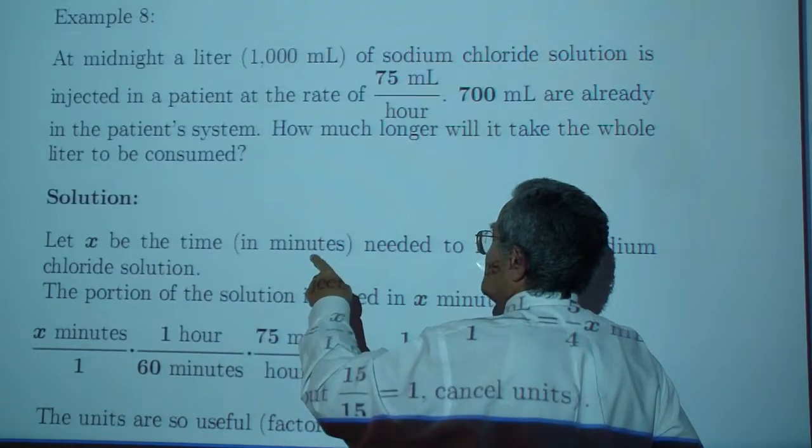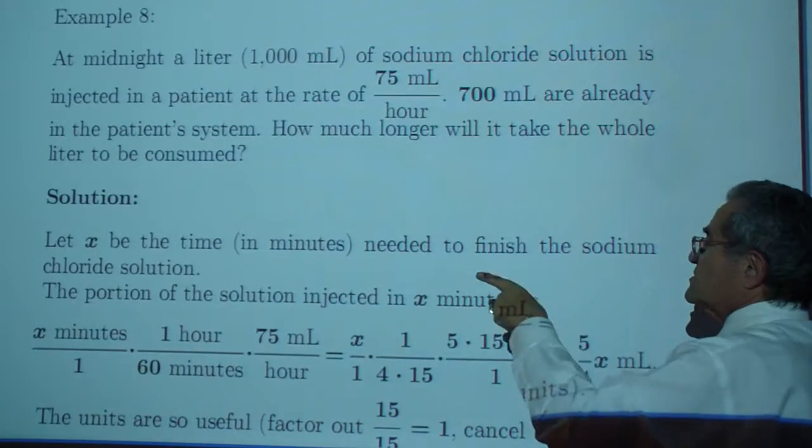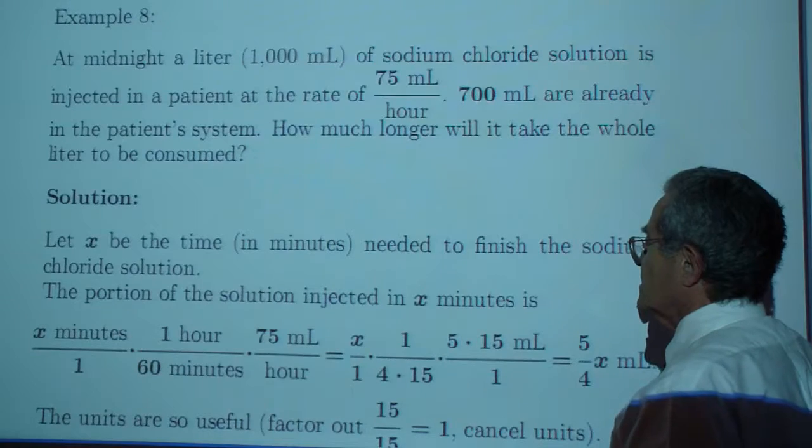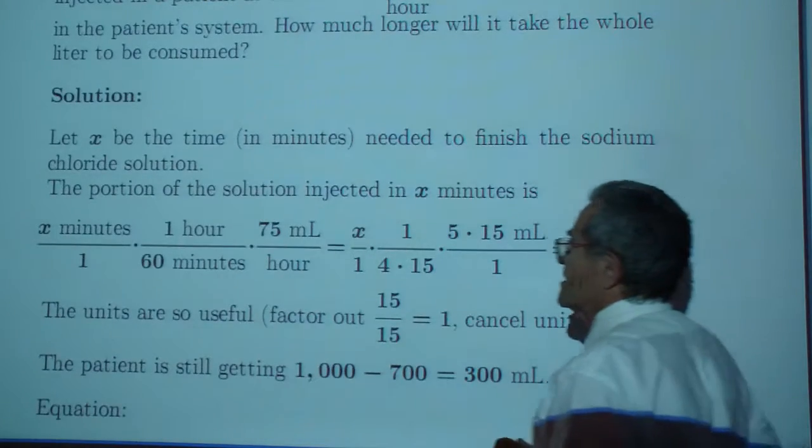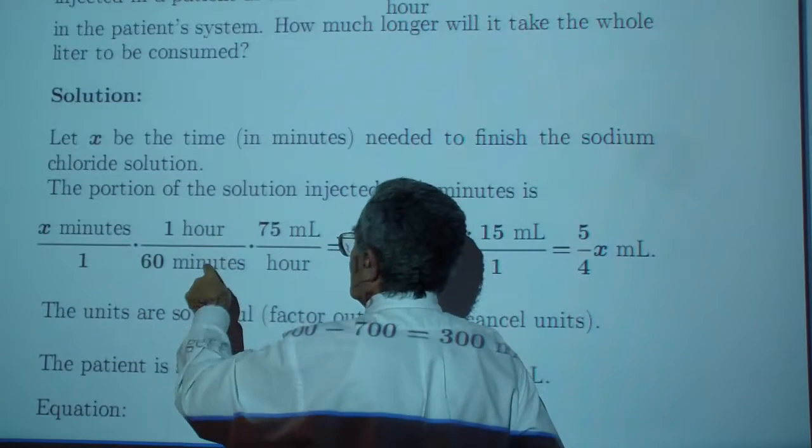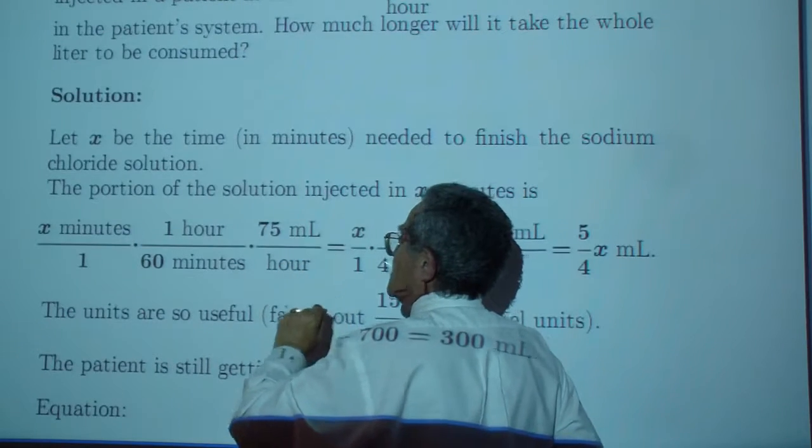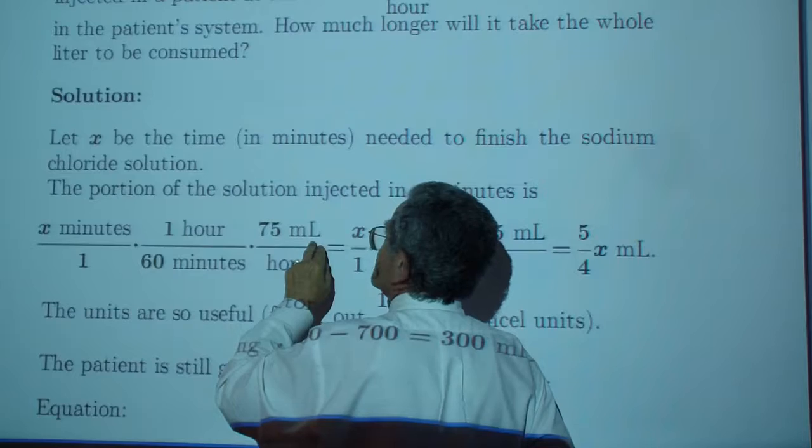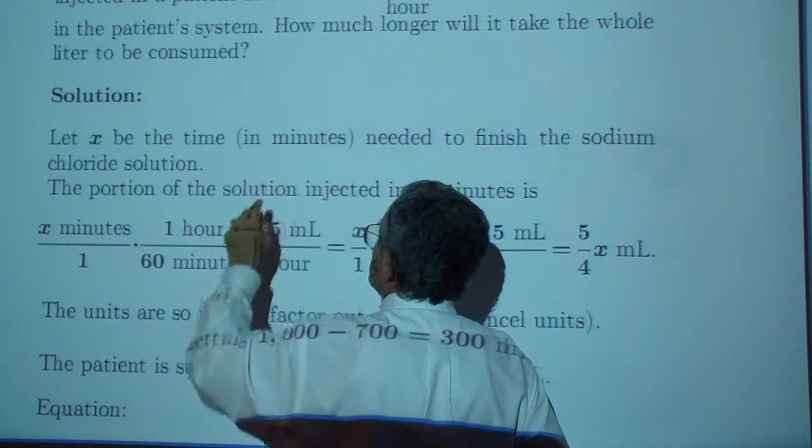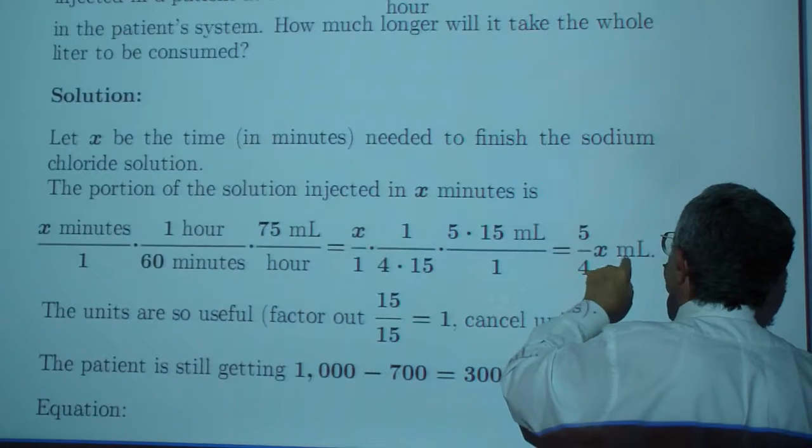Let x be the time in minutes needed to finish the sodium chloride solution. The portion of the solution injected in x minutes is x minutes times 1 hour per 60 minutes times 74 milliliters per hour. Note the minutes drop out, the hours drop out, you're left in milliliters. So, the x minutes correspond to 5 for x milliliters.